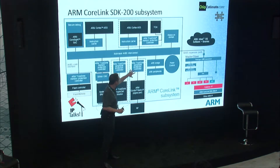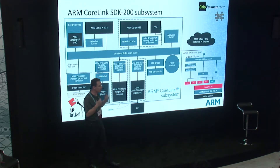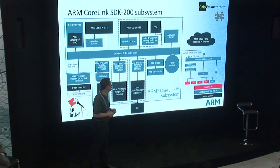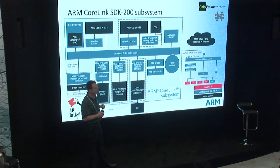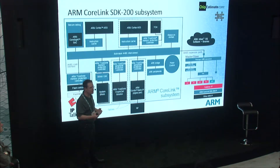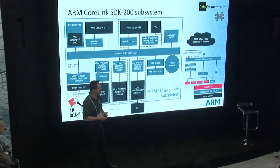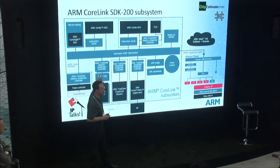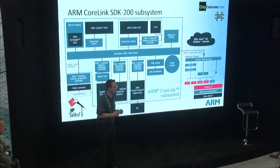We have implemented TrustZone security within the system. You see protection controllers that manage the accesses, making sure we segregate the secure accesses and the non-secure accesses. There is an interconnect that is able to propagate the security information, and we have assembled around that some IP and peripherals that are meaningful in an IoT context. We have made this in a way that is useful to our partners, containing power control and a power-conscious architecture. This is a really optimal way to start a secure IoT design.